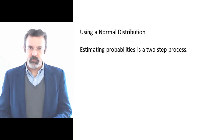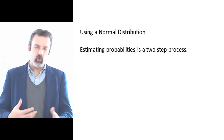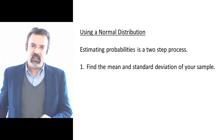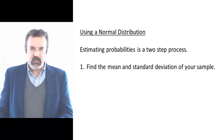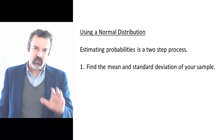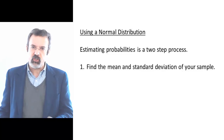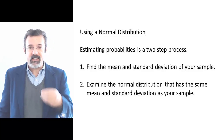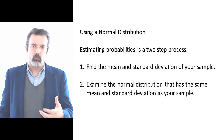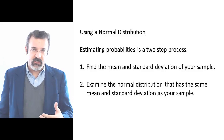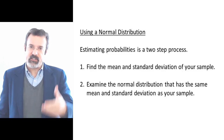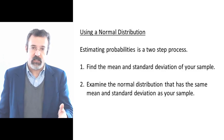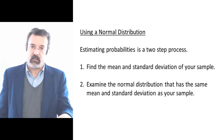Estimating probabilities is a two-step process. We begin by calculating the mean and the standard deviation of a sample of data. We then examine the normal distribution that has the same mean and standard deviation as our data.